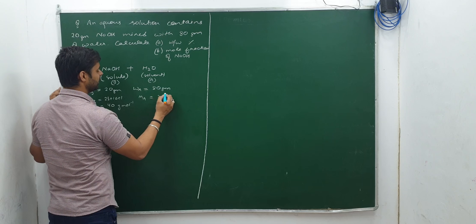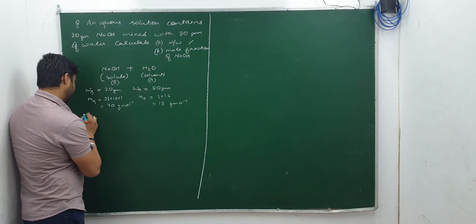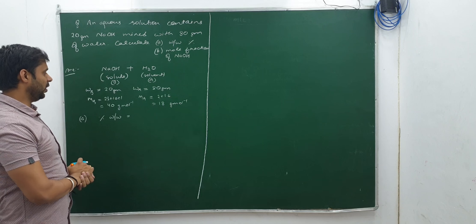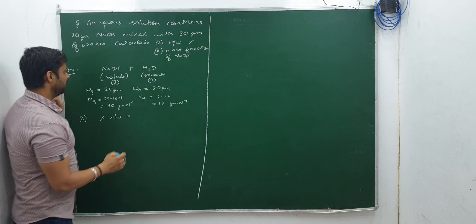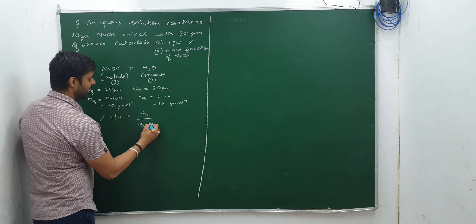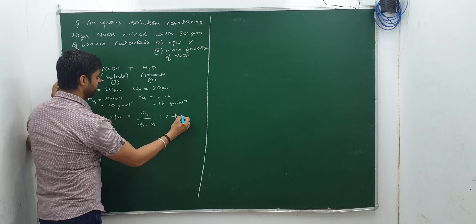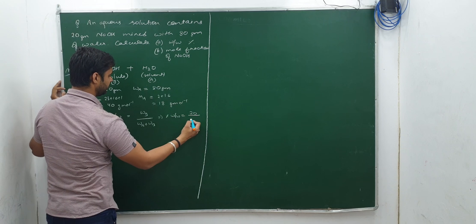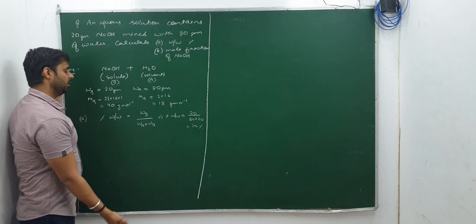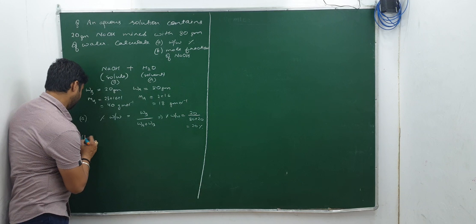First part: percentage w/w = W_B / (W_A + W_B) × 100. So percentage w/w = 20 / (80 + 20) = 20/100 = 20 percent.